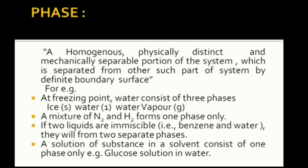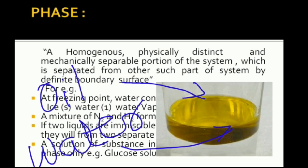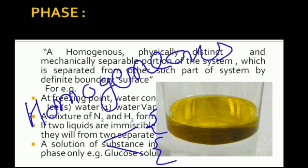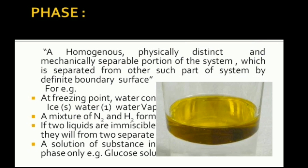To understand this definition, let us take an example in which oil is mixed with water. There are two homogeneous parts in this heterogeneous system. Remember, homogeneous means well mixed. Since these two portions are not well mixed, there are two homogeneous parts in this heterogeneous system. These two portions have different physical properties like boiling point, refractive index, density, etc.